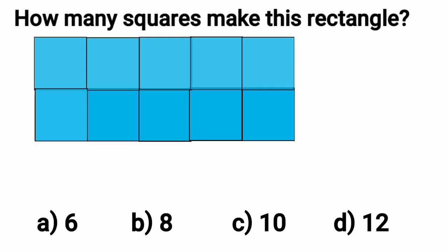In the next row, 6, 7, 8, 9, and 10. So kids, here we have 10 squares. This rectangle is made up of 10 squares. Option C, 10 is the correct option and we place a tick mark here.